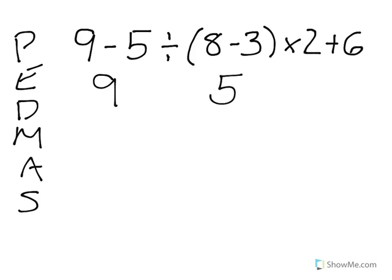So I'm going to rewrite 9 minus 5 divided by 5 times 2 plus 6. And again, you do need to write it out and show your work. This will help you avoid making any mistakes. Now, the next thing we're going to do is we're going to multiply and divide, going from left to right. So the first thing I see here is 5 divided by 5. So that's 1.